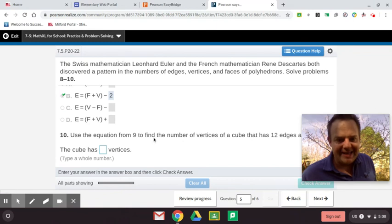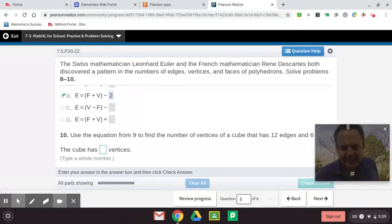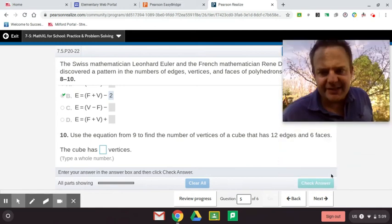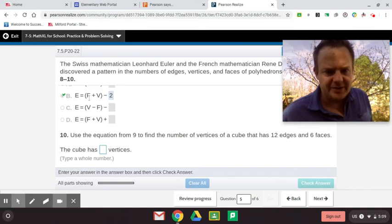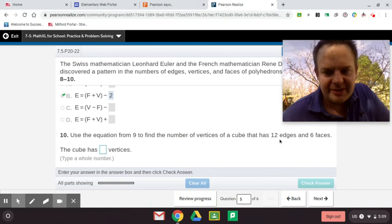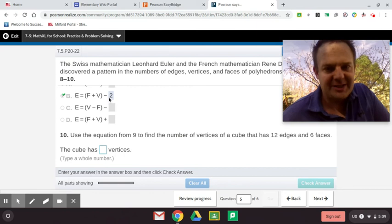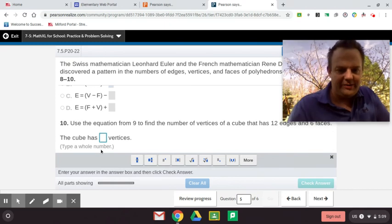Use the equation from nine to find the number of vertices of a cube that has 12 edges. Six faces. The cube has how many vertices? So let's look at here and we'll substitute the values. 12 will be E, six will be F. So six plus what minus two equals 12. So six plus what? And then minus two. So let's try to get two more with the inverse operation. Two more than 12. What's two more than 12? That's right. 14. So six plus what equals 14. So six plus eight equals 14. And then 14 minus two is 12 right there. So there are eight vertices on a cube.